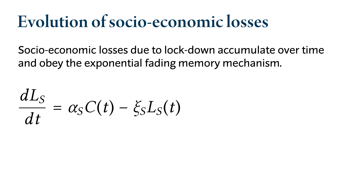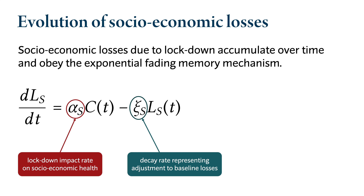Individuals change their closure support behavior according to the so-called imitation dynamics. Individuals who oppose closure sample the behavior of individuals who support closure and vice versa. The rate of interactions between these two types of individuals is proportional to the product of their frequencies, and the rate at which individuals switch their behavior is proportional to the payoff gain. Kappa_s is the social learning rate, describing how fast individuals are willing to switch their behavior. Socioeconomic losses also accumulate with time — the longer the lockdown measures are in place, the greater these losses become. The rate of change of this function is modeled using an exponential fading memory mechanism, where losses accumulate only when lockdown measures are in place but past losses decay with time.